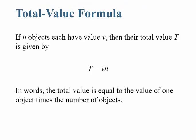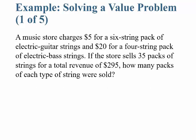Let's talk about the total value formula. If n objects each have value v — for example, I'm selling 10 things and they each have a value of $5 — then their total value T is given by T = v times n. In other words, the total value equals the value of one object times the number of objects. Let's work an example.